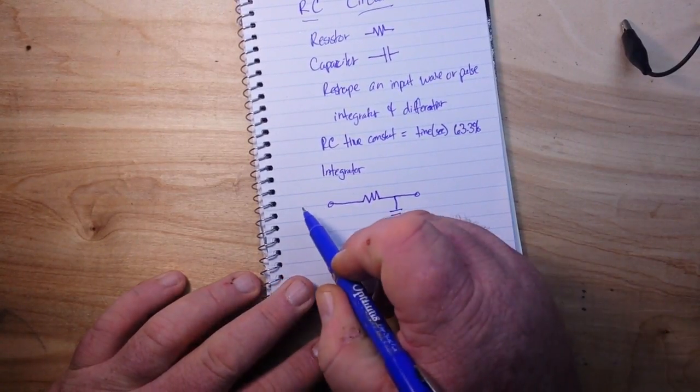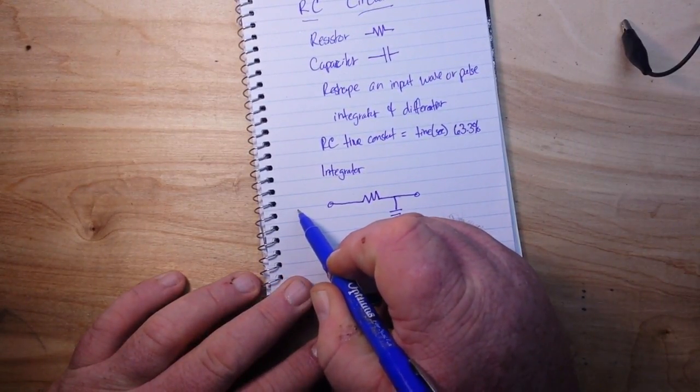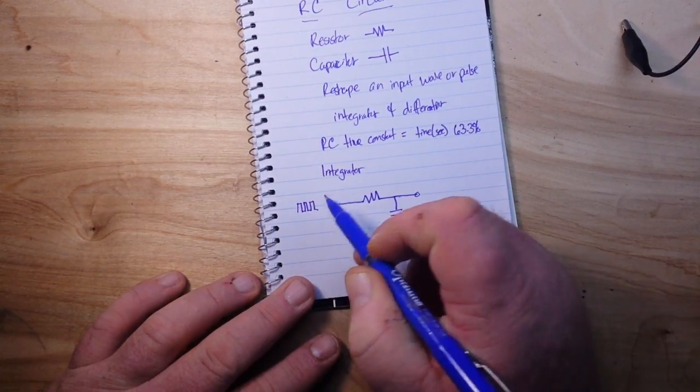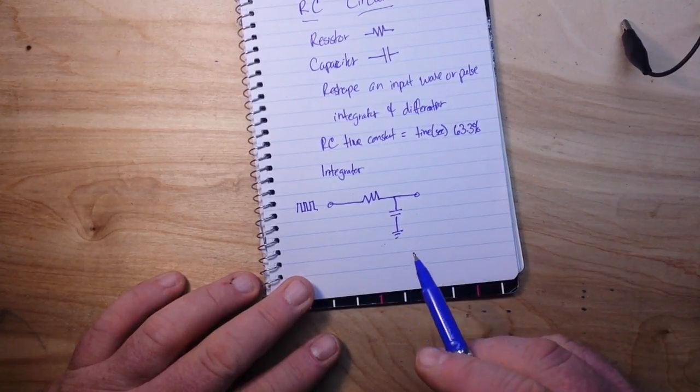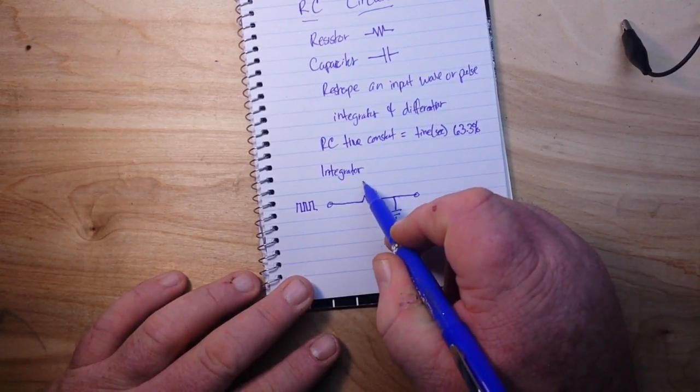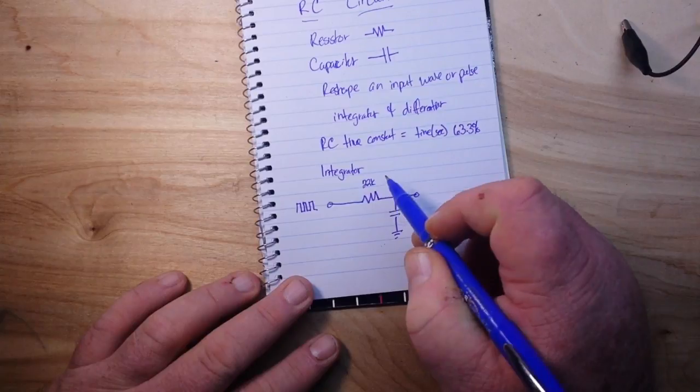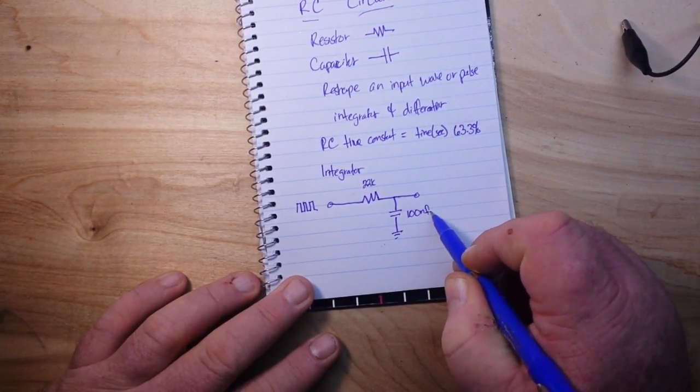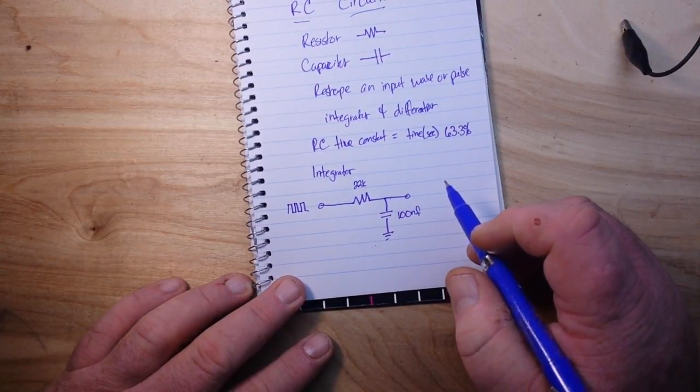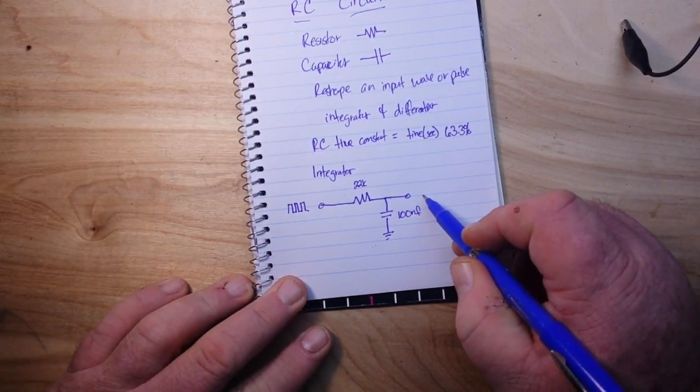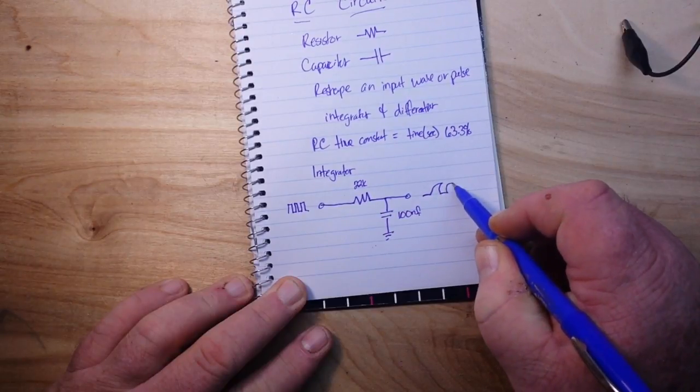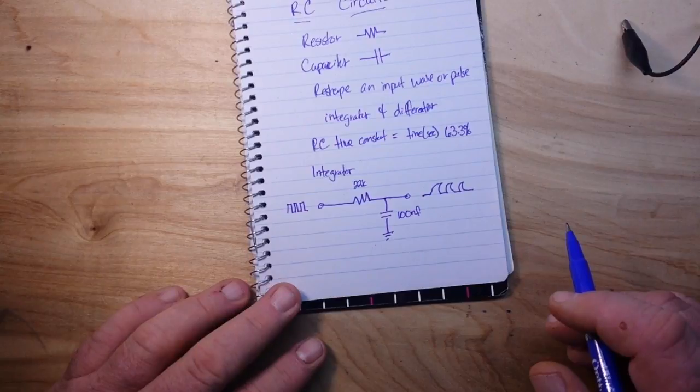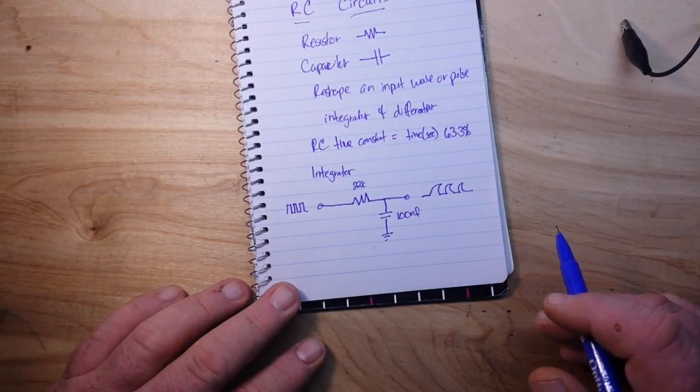What we're going to do is feed in a signal, in this case a square wave signal, into this circuit. The values that we're going to use are 22k and 100 nanofarad. What we're going to get out is the standard sawtooth waveform.